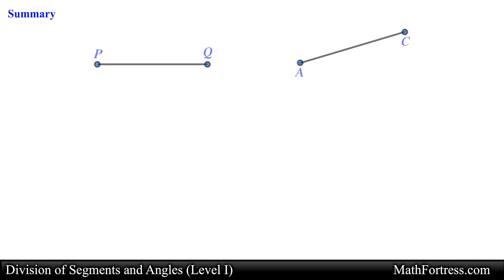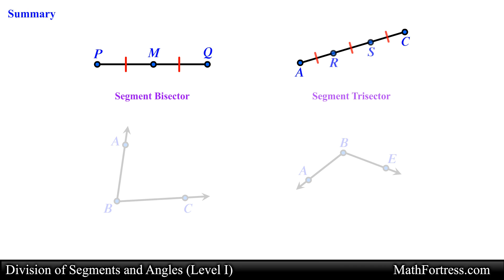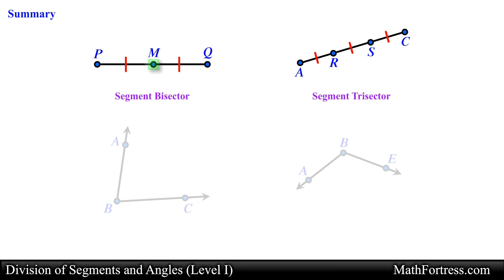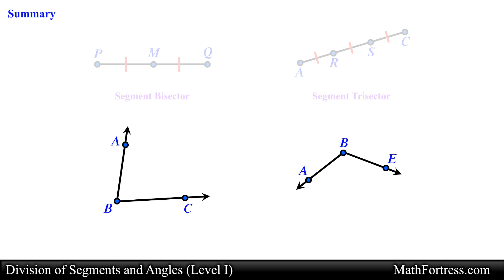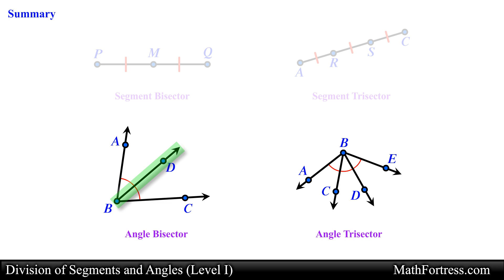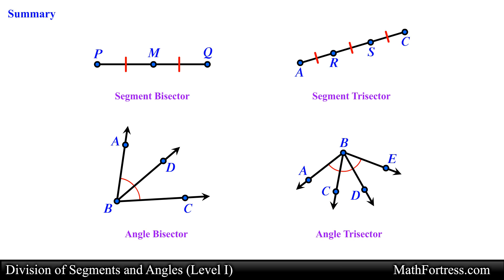To recap: segments and angles can be divided. Segment bisectors intersect a segment at a point called the midpoint, dividing the segment into two congruent segments. Segment trisectors create two points called trisection points, dividing the segment into three congruent segments. Angle bisectors divide an angle into two congruent adjacent angles. Angle trisectors divide an angle into three congruent adjacent angles. In our next video we will start applying these new concepts and go over some basic examples.